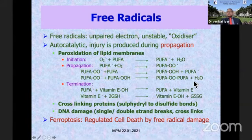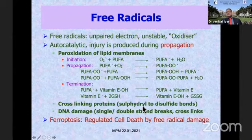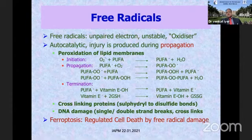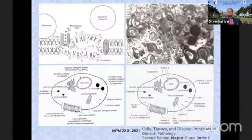Exactly similar to these myelin figures, cross-linking of proteins also occurs when sulfhydryl groups of proteins are attacked by free radicals, forming disulfide bonds. Damage is also produced by single and double strand breaks as well as cross-linkage of DNA. There is also a newer type of cell injury called ferroptosis, which is a non-enzymatic free radical injury.